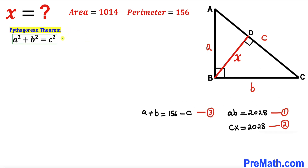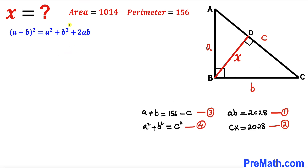Recalling the Pythagorean theorem: a squared plus b squared equals c squared. We label this as Equation 4. We also recall the famous identity: (a plus b) whole squared equals a squared plus b squared plus 2 times ab.